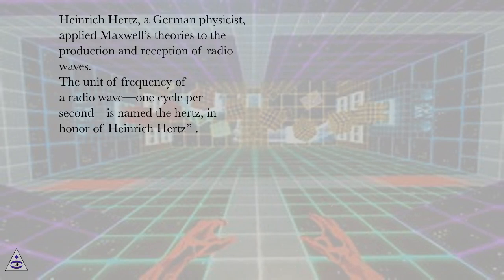Heinrich Hertz, a German physicist, applied Maxwell's theories to the production and reception of radio waves. The unit of frequency of a radio wave, one cycle per second, is named the Hertz, in honor of Heinrich Hertz.